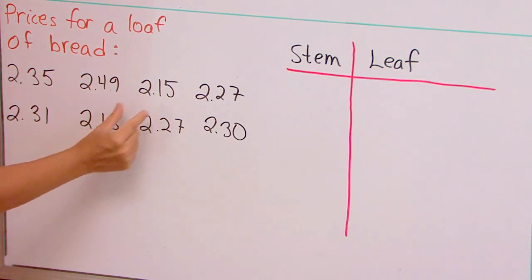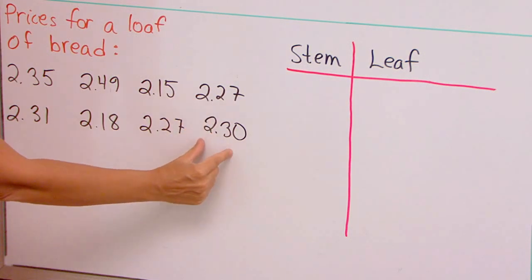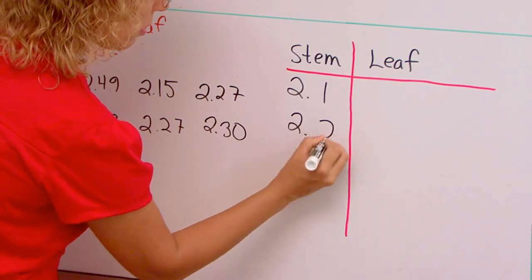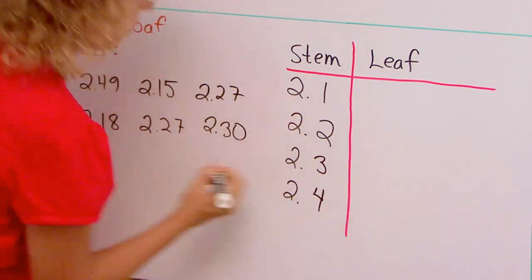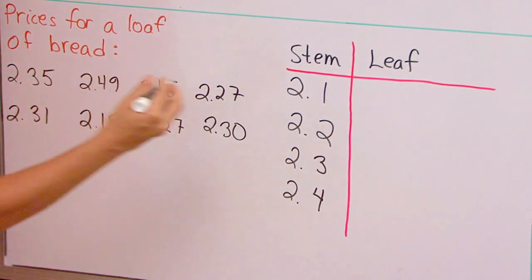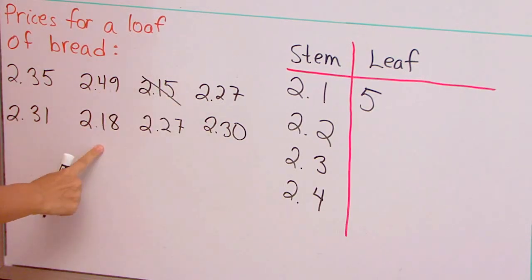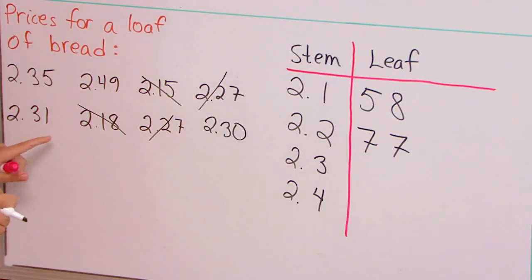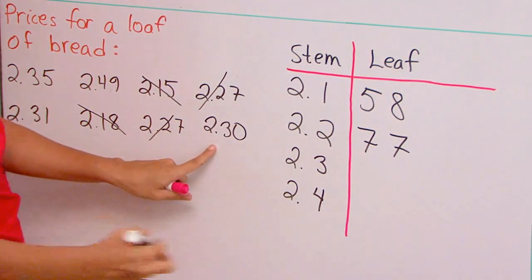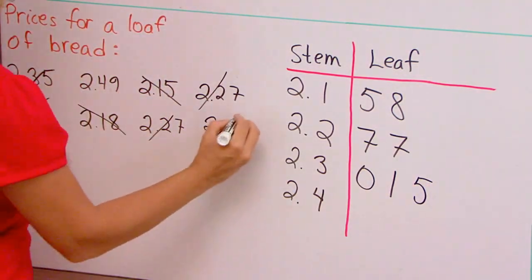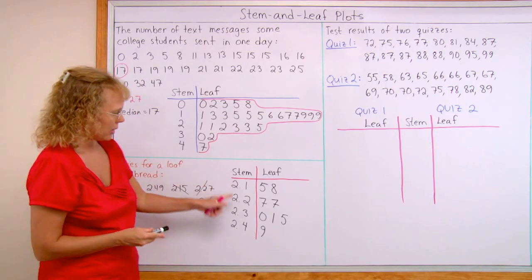So I would have here two point one, this is the smallest one. There's two point two, two point three, two point four. So those will be the stems: two point one, two point two, two point three, and two point four. This data is not in order, so I need to be careful. Write the leaves there. This is the smallest number here, so it goes here. And then this one, like that. Then two point two somethings: I have two point two seven, two point two seven. And then I have two point three somethings, these three: two point three zero, two point three one, and two point three five. And lastly, two point four nine. So the stem and leaf plot is ready now.